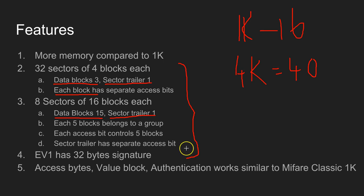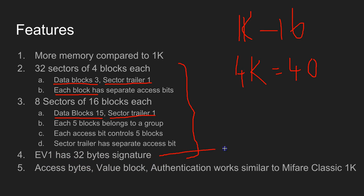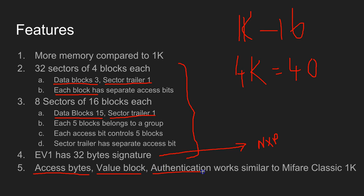The sector trailer has got its own access bit. You'll understand this better when I give you a demonstration. You can also have MIFARE Classic version 0 as well as MIFARE Classic EV1. The only difference between Classic and EV1 is that EV1 has got a 32-byte signature, which you can use to verify the RFID tags are indeed manufactured by NXP. If you understand how MIFARE Classic 1K works, you can easily understand the 4K as well, because the access bytes, value block, and authentication all work the same.